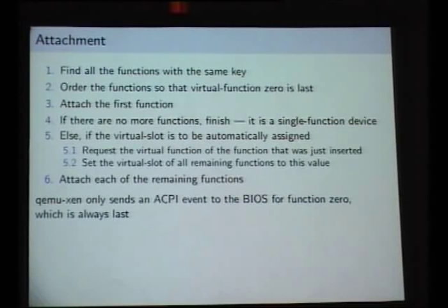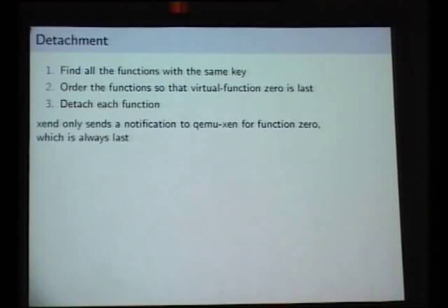And right at the end when QEMU then gets the function 0 passed through it's only then that it notifies the BIOS and the BIOS notifies the OS and when that notification goes through for function 0 that is enough for the BIOS and the operating system to say hey here's the multifunction device all these other devices hanging around on the bus let's go for it. Okay so detachment is actually a bit simpler because we don't have to worry about assigning slot numbers we just find all the functions that have the same key order them so function 0 is last and detach them all and again QEMU only gets a notification for the last one function 0 that's all it needs otherwise it gets confused and the state gets inconsistent and then you've got to reboot the whole machine.